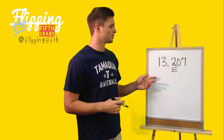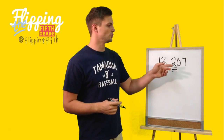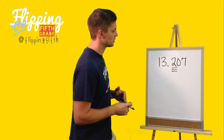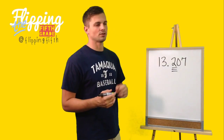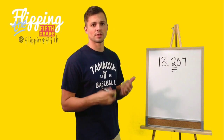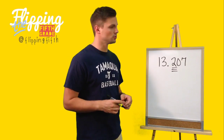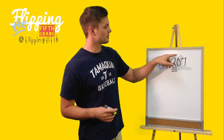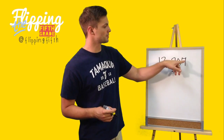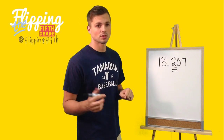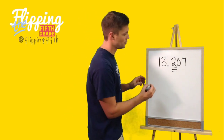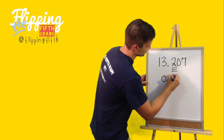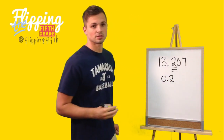Here we have the number thirteen and two hundred seven thousandths. If you notice that the 2 is underlined, what is the value of that 2? We have to know our place value. Starting after the decimal, we have tenths, hundredths, and thousandths. So the value of that 2 is two-tenths.